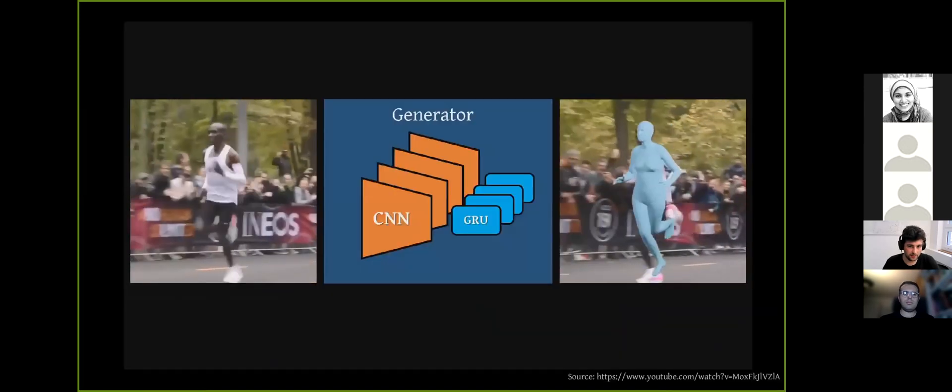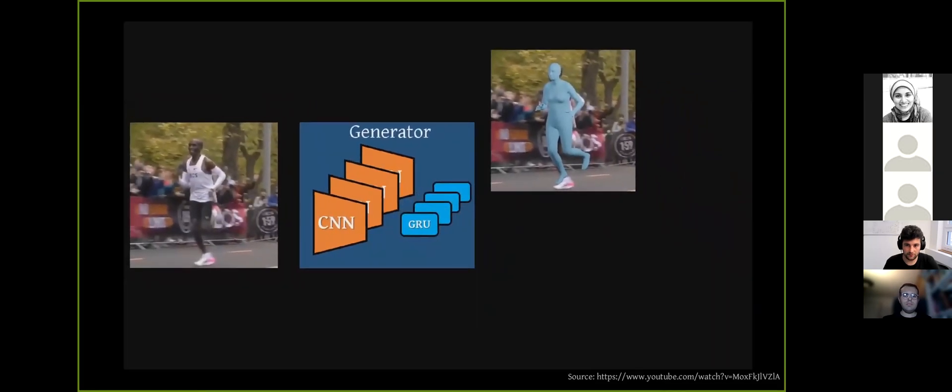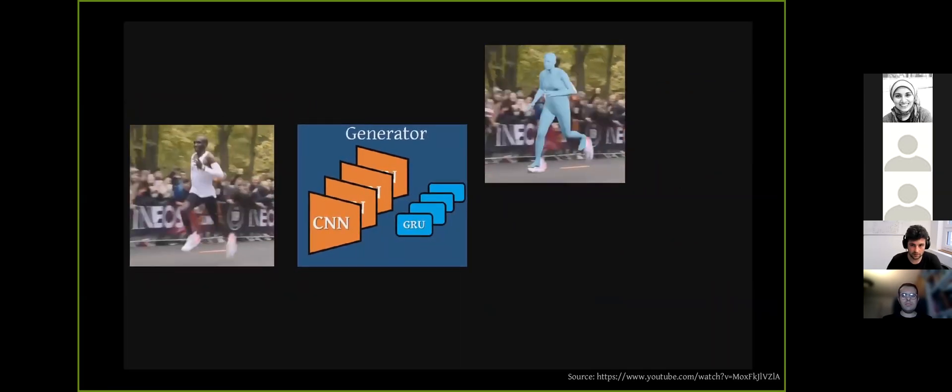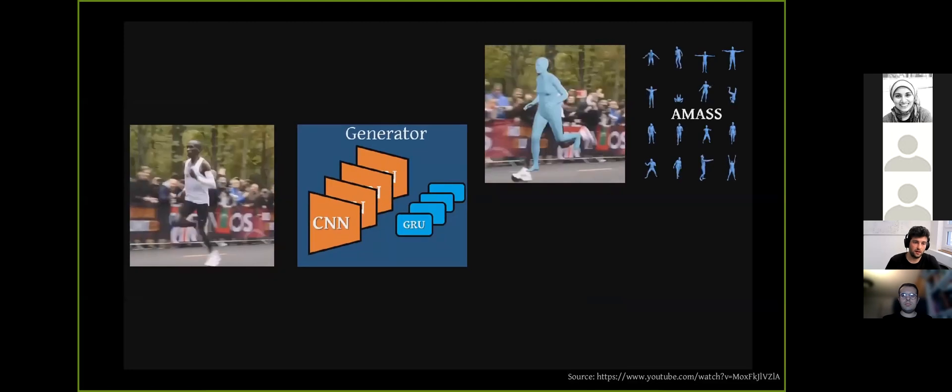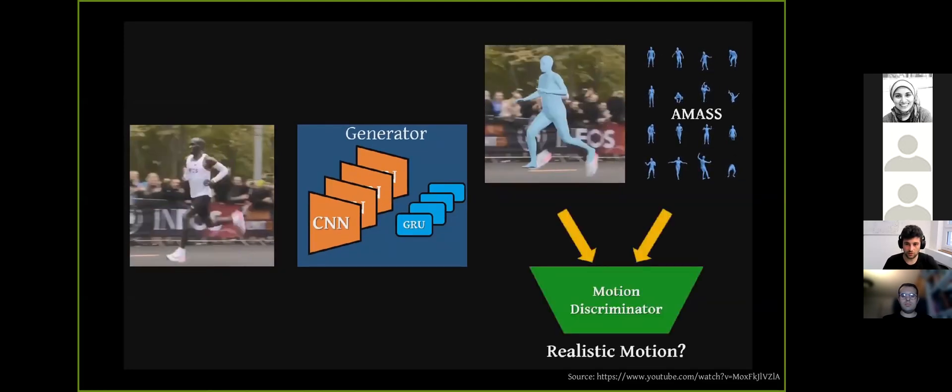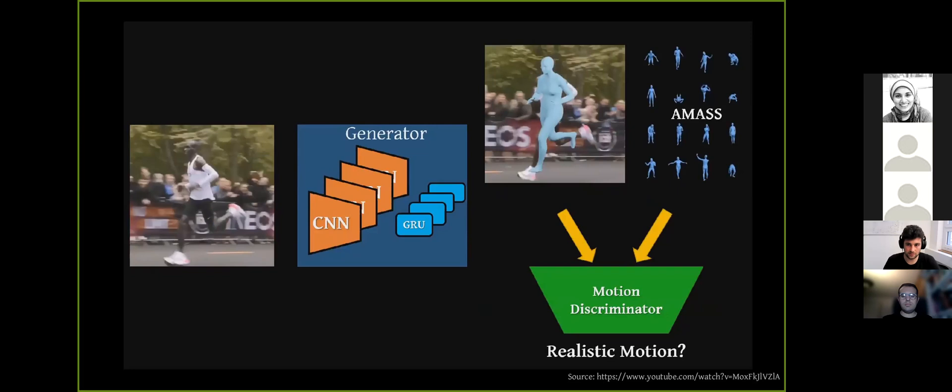We call the resulting method VIBE. Here, given the video of a person, we train a temporal model to predict the SMPL parameters, while a motion discriminator tries to distinguish between real and predicted sequences. Everything is trained end-to-end in a conditional generative adversarial manner.